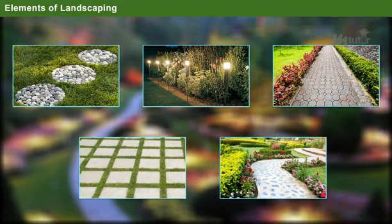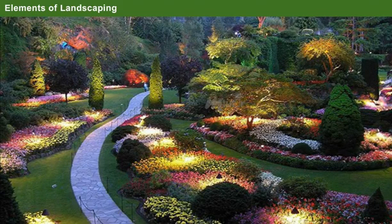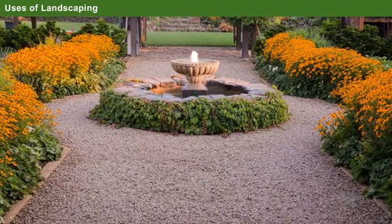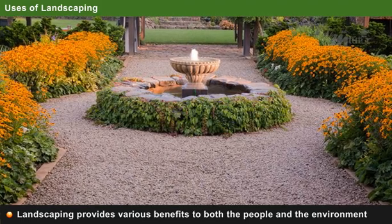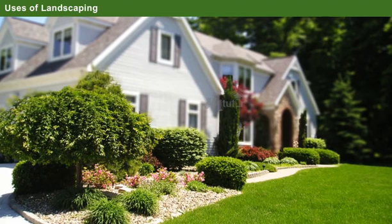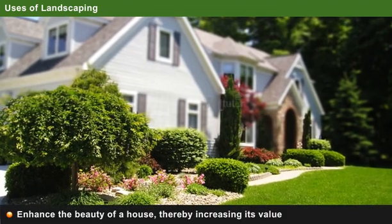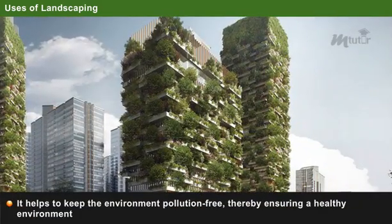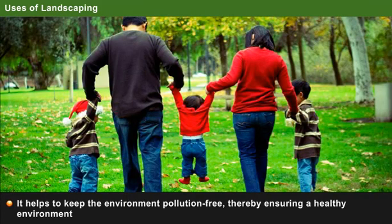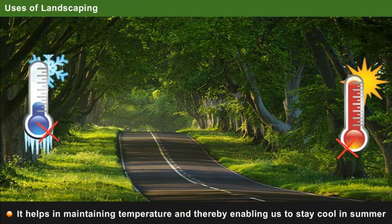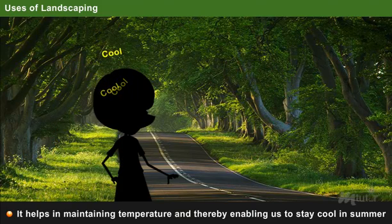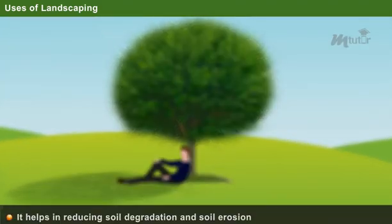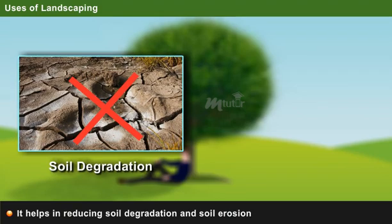Hence, proper planning of landscaping elements delivers pleasant and appealing gardens. Let us conclude this topic by highlighting some of the uses of landscaping. Landscaping provides various benefits to both the people and the environment. First and foremost, it tends to enhance the beauty of a house, thereby increasing its value. Landscaping helps to keep the environment pollution free, thereby ensuring a healthy environment. It helps in maintaining temperature, enabling us to stay cool in summer. It serves as the best means for relaxation and recreation. It also helps in reducing soil degradation and soil erosion.